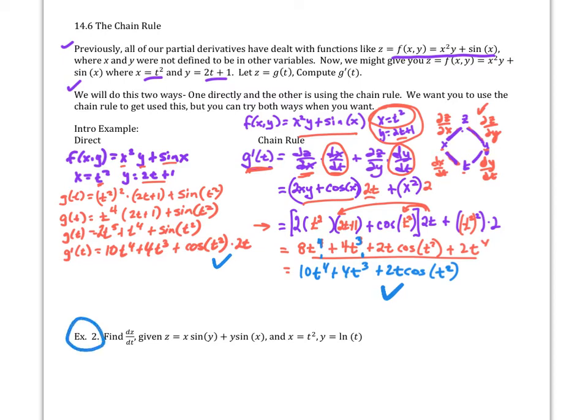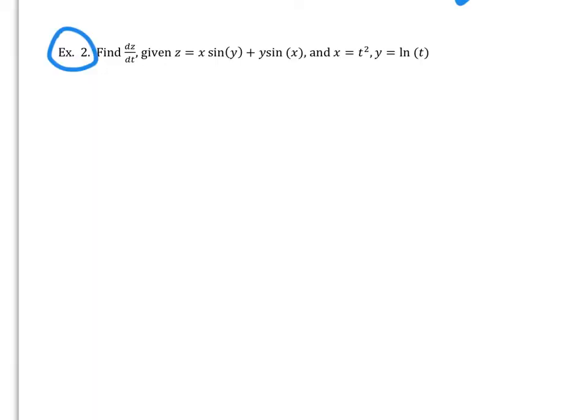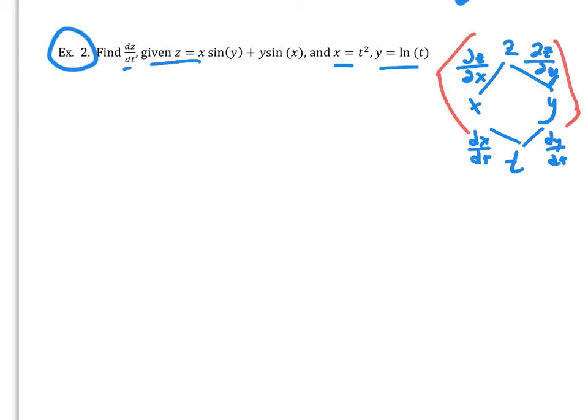So let's use the chain rule for example number two. So I'm given z and they want me to find dz dt and then I have x and t and y and t. So let's set up our little chart here. So we're going to go for x and we're going to go for y and then we're going to come back to t. So this would be my partial. And I'm going to pause this and fill it out. And there's my little chart. So once again we just go down and multiply. Down and multiply.